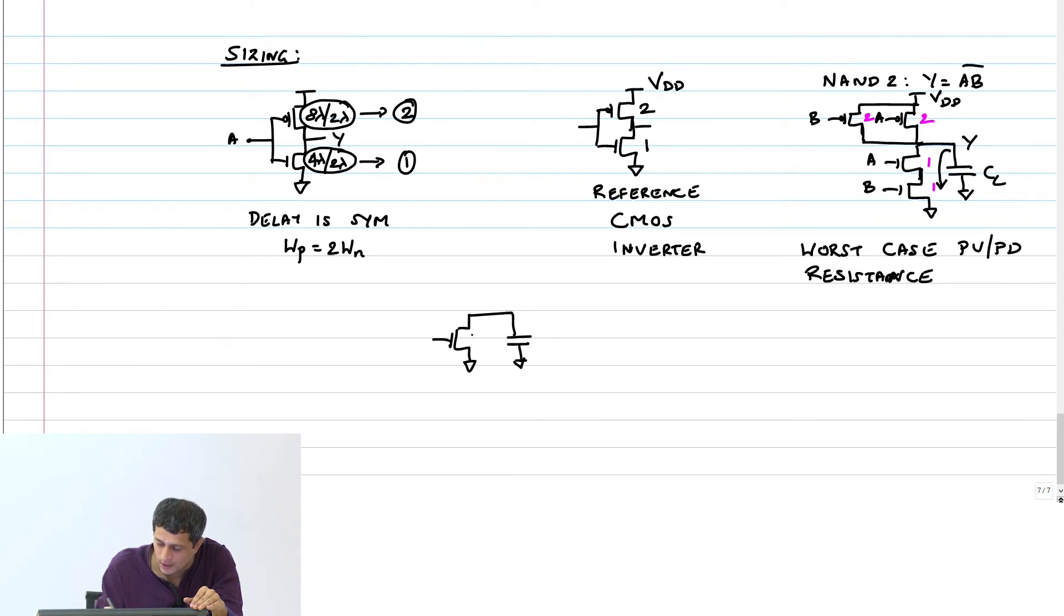So we will look at worst case pull-up or pull-down. And when I say resistance, it's resistance for delay. Let us assume that a capacitor here is being discharged—it has VDD initially and is now being discharged through this pull-down stack. I want to look at the worst case resistance that will be offered by that stack and ensure some constraint on that. So first let us look at when we had a single transistor with size 1 unit width.